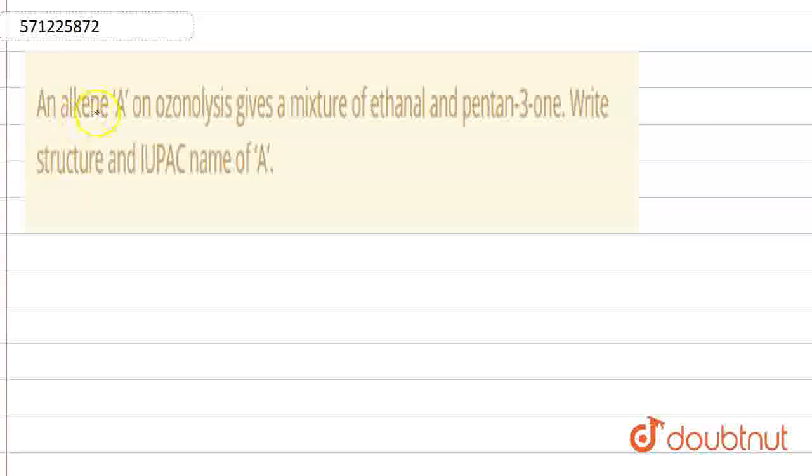Hello, the question is: Alkene A on ozonolysis gives a mixture of ethanal and pentane-3-one. Write the structure and the IUPAC name of compound A.